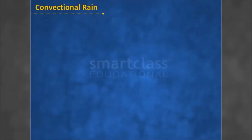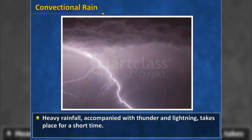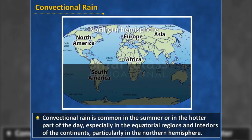Convectional rain: hot air becomes light and rises in convection currents. As it rises, it expands and loses heat, therefore condensation takes place forming cumulus clouds. Heavy rainfall accompanied with thunder and lightning takes place for a short time. Convectional rain is common in the summer or in the hotter part of the day, especially in the equatorial regions and interiors of the continents, particularly in the northern hemisphere.